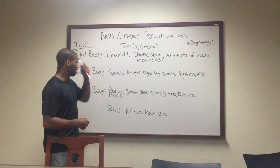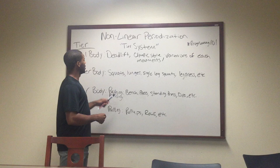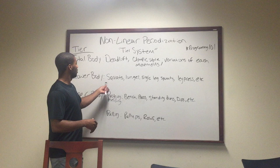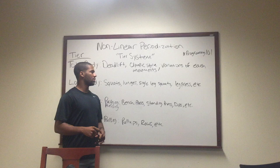Lower body includes basically knee and hip extension. While the total body was three extensions — knee, hip, shoulders — lower body is just two extensions, which is your knee and your hips. So we've got squats, lunges, single leg squats, leg press, etc.